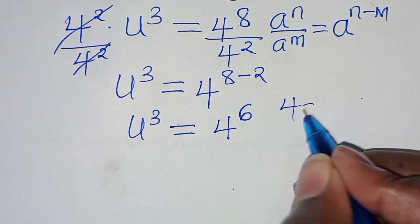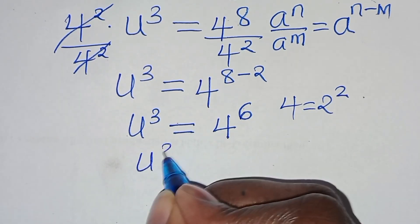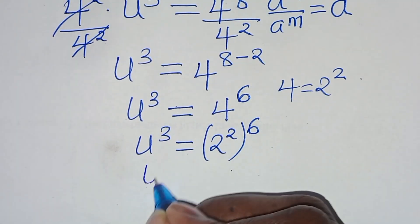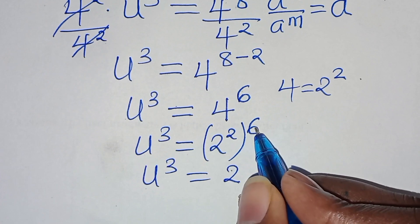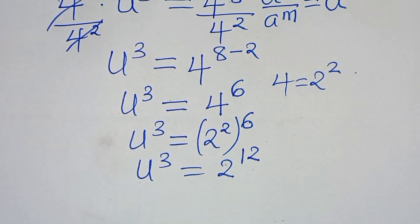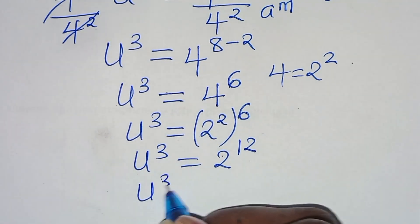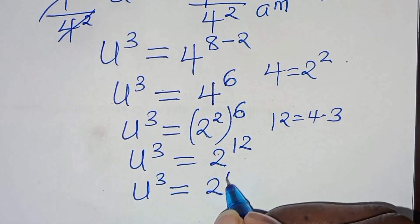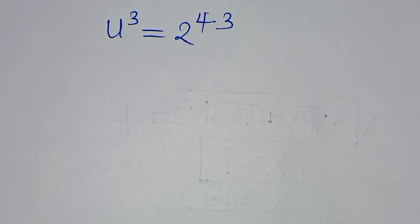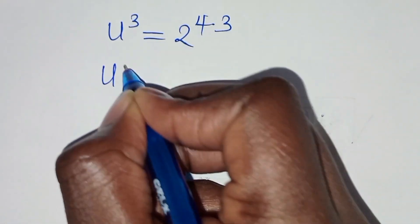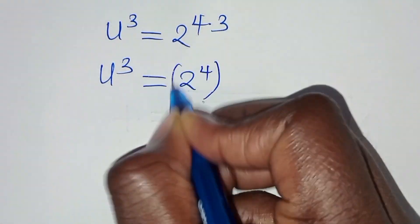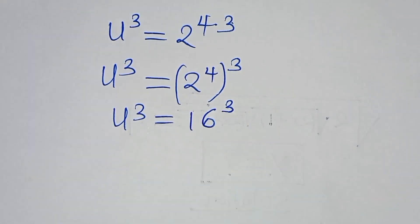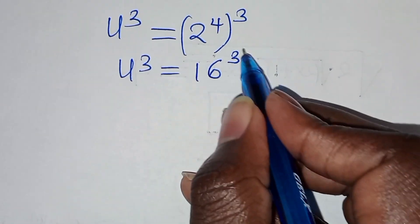From here, we can express 4 as 2 to the power of 2, so we have u to the power of 3 equal to 2 raised to the power of 2 raised to the power of 6. This implies u to the power of 3 equals 2 raised to the power of 6 times 2, which equals 12. So u to the power of 3 equals 2 raised to the power of 12. We can express 12 as 4 times 3, so we have 2 raised to the power of 4 times 3. This implies u to the power of 3 equals 2 raised to the power of 4 raised to the power of 3. Since 2 to the power of 4 equals 16, we have u cubed equals 16 cubed.